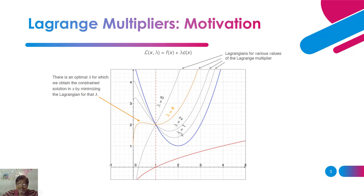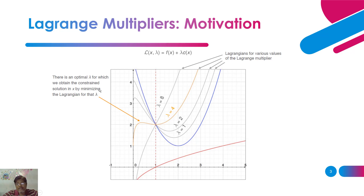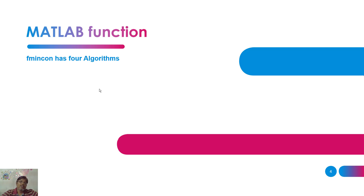By increasing lambda, I can bring the function to this state. You can see that the values 1, 2, 4, 8 — by increasing the values of lambda — I can shift the function. There is an optimum lambda we have to choose; by changing direction in the feasible region, there is an optimum lambda for which we can obtain the constrained solution in x. So both lambda and f of x have to be optimized.